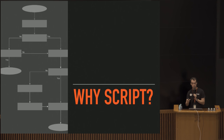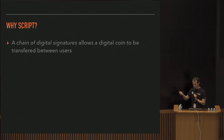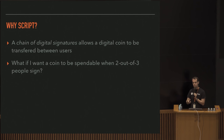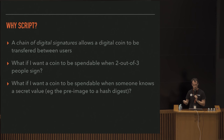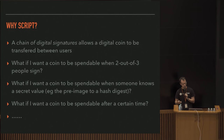Why do we have script at all? In my first talk I discussed digital signatures and using them to transfer coins from one owner to another. But what if I want my coin to be spendable when two out of three people sign - like an escrow or cold wallet service? What if I want a coin spendable when someone presents a secret, like the pre-image to a hash digest? What if I want a coin spendable after a certain amount of time?